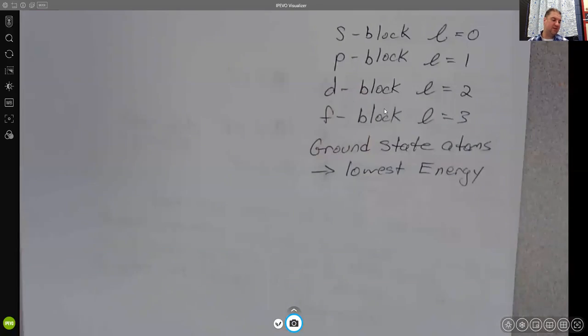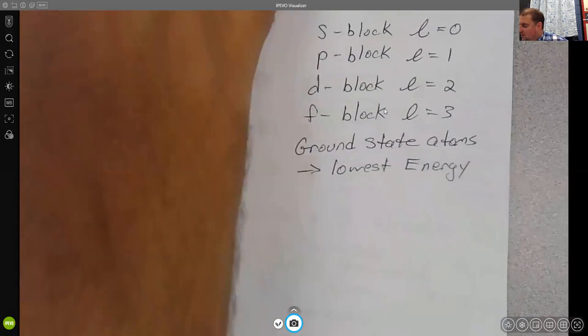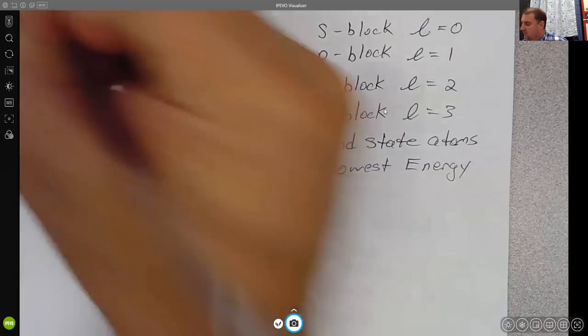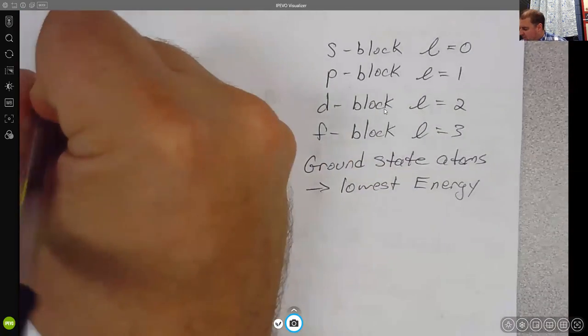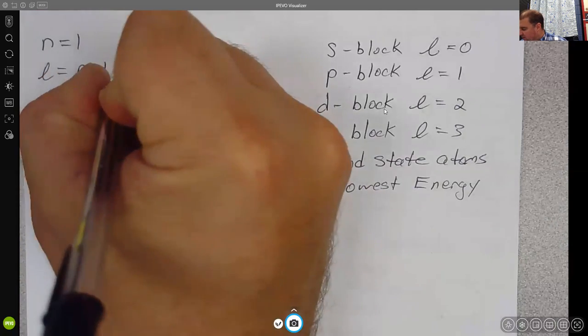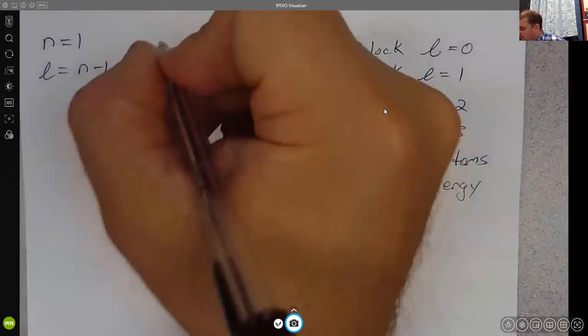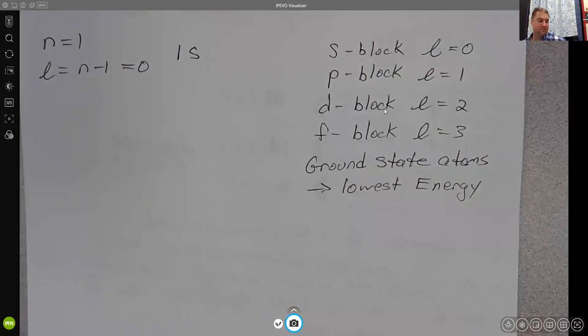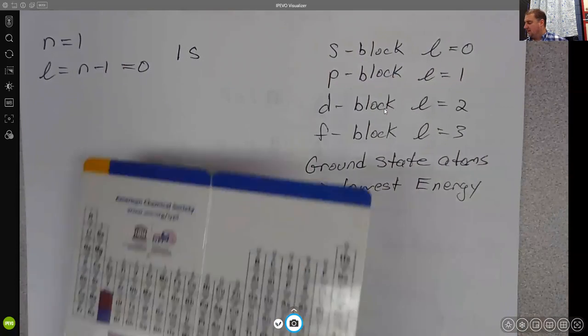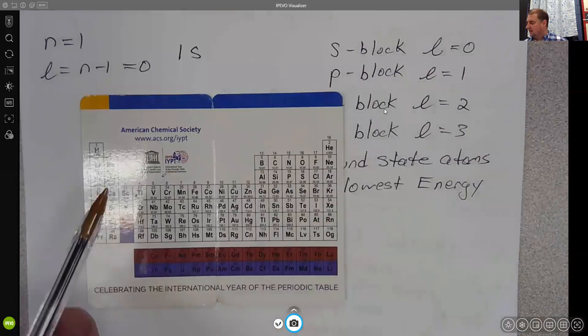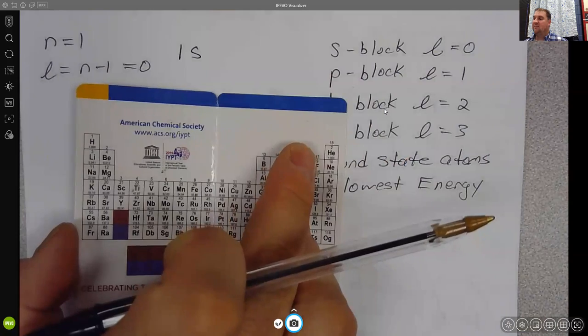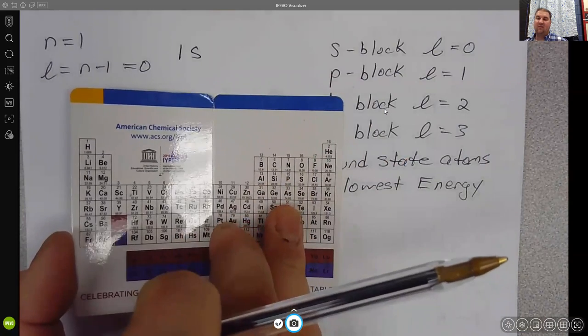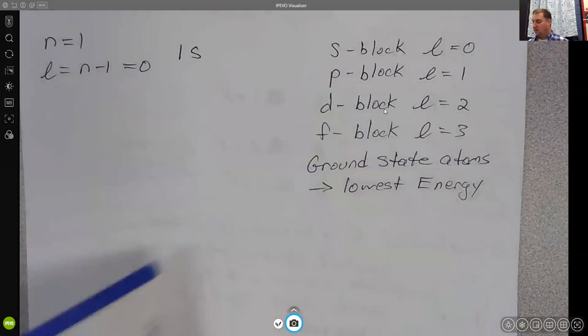Now based off of the allowed values, when N equals 1, the only allowed value for L is N minus 1, which is 0. So there is only a 1s orbital. When we look at the periodic table, we see hydrogen and we see helium, and that is all we see in that first period and that is all that we see filling electrons in for the first shell.